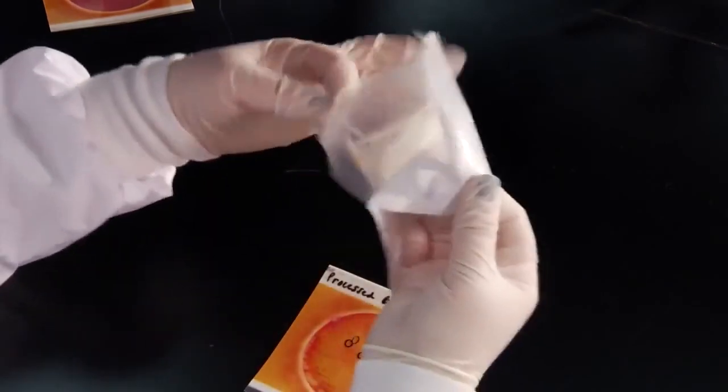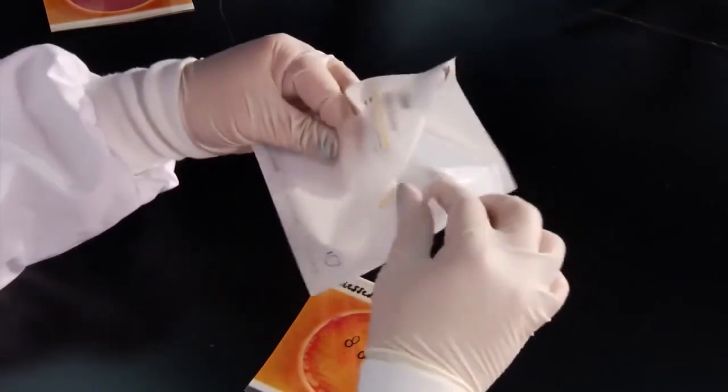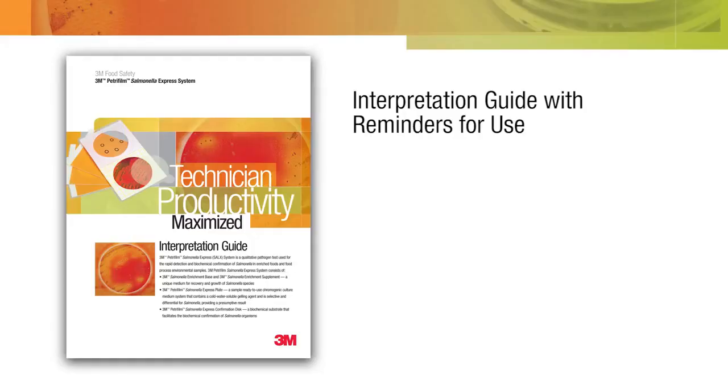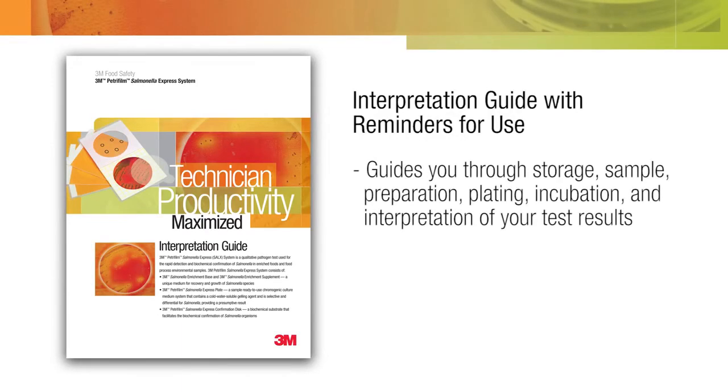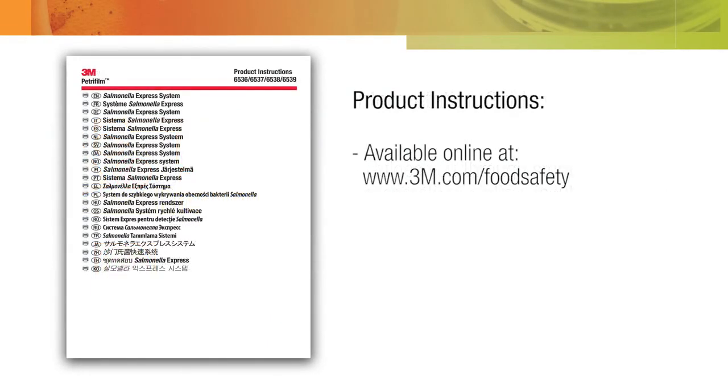Before adding the disc to the plate, allow the plates to warm to 20 to 25 degrees Celsius. With each type of 3M Petrifilm plate, an interpretation guide with reminders for use is provided to guide you through storage, sample preparation, plating, incubation and interpretation of your test results. Product instructions are also available online and contain complete product information.